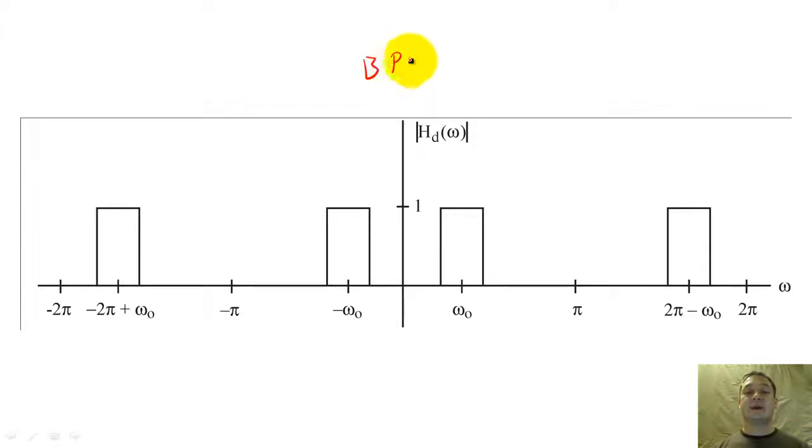The third type of filter is the band-pass filter. This filter allows only a small band of frequencies to be passed, while all other frequencies will be attenuated to zero.